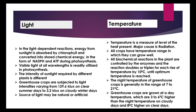Temperature is a measure of the level of heat present; the major cause is radiation. All crops have a temperature range in which they can grow well. All biochemical reactions in the plant are controlled by enzymes, and the reaction rate doubles or triples for each rise in temperature of 10°C until the optimum temperature is reached.